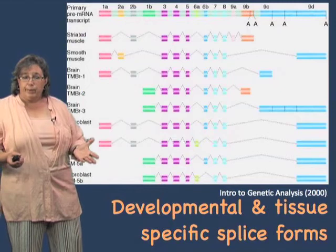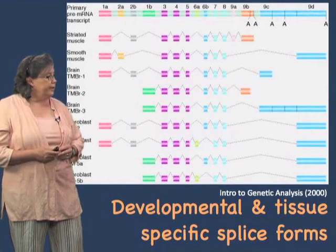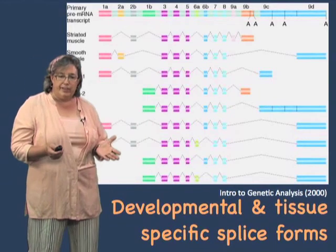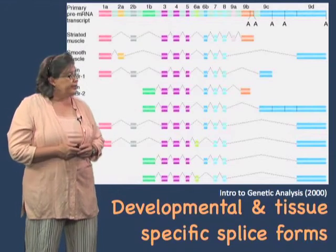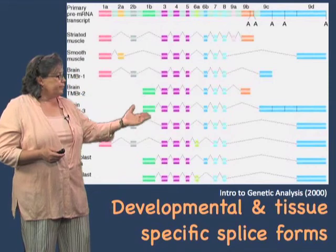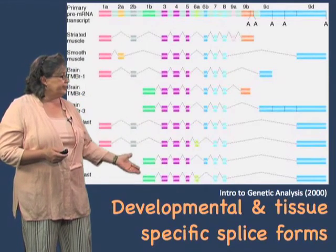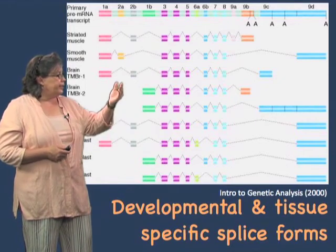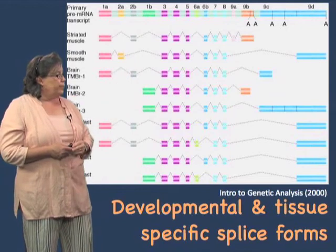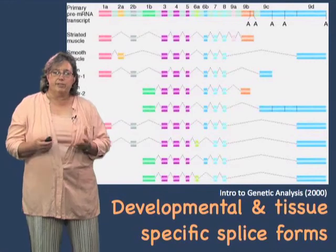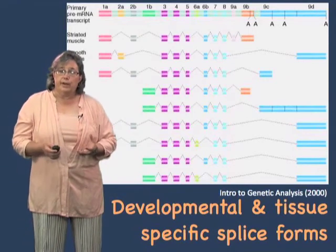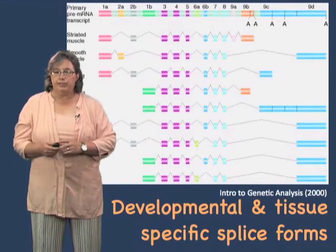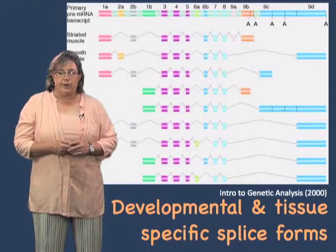How many different proteins can be made from one gene? The alpha-tropomyosin gene from rat has many different splice forms — in fibroblasts, those essentially undifferentiated cells, in the brain, in the smooth muscle. One of the important things about splicing is that it can be developmentally and tissue-specifically controlled. So one gene in one tissue might make one protein, but in another tissue it makes a very different protein. That's how we add to complexity.